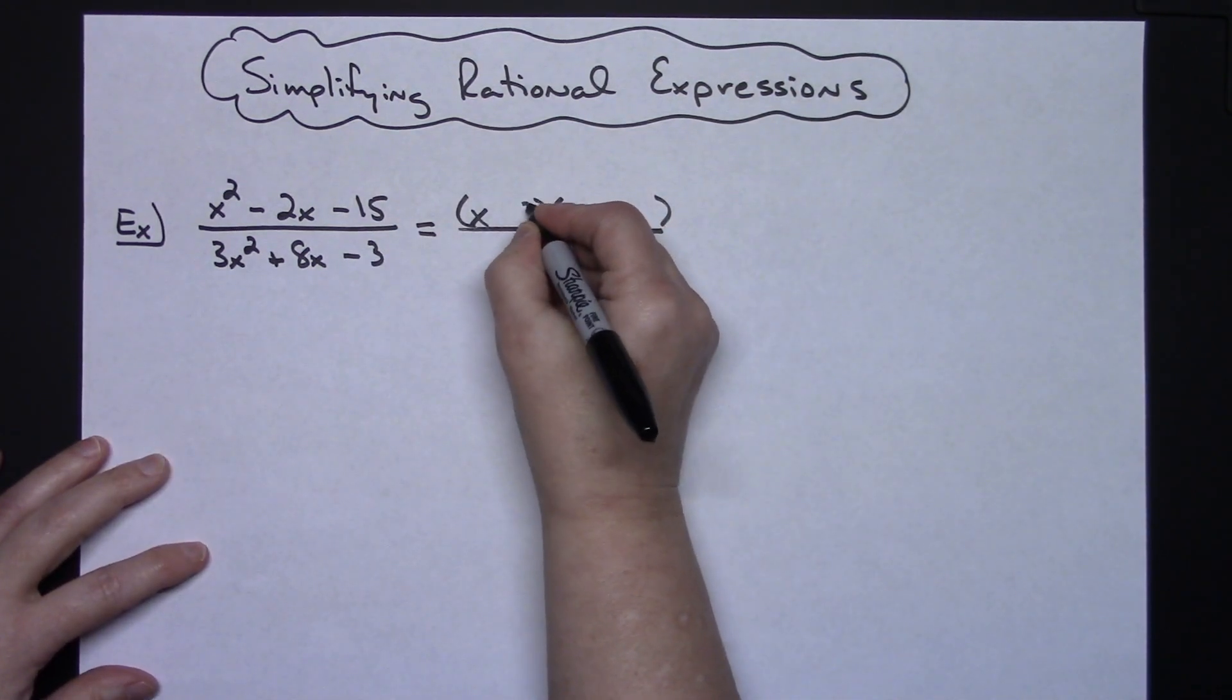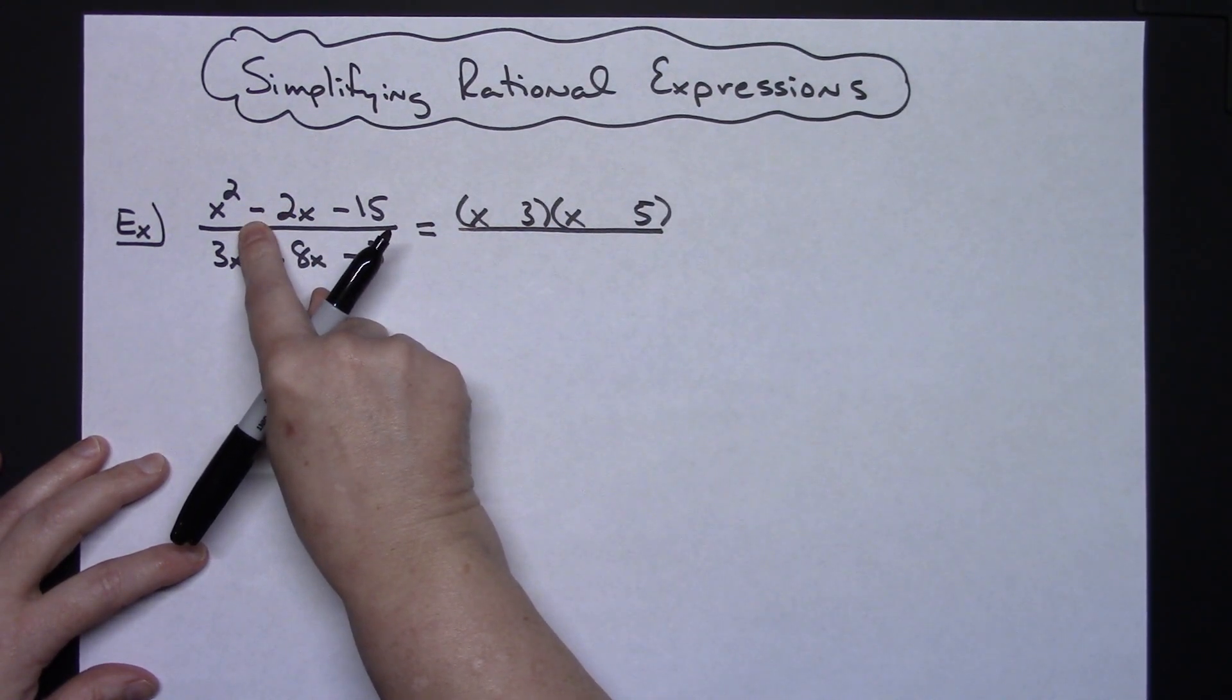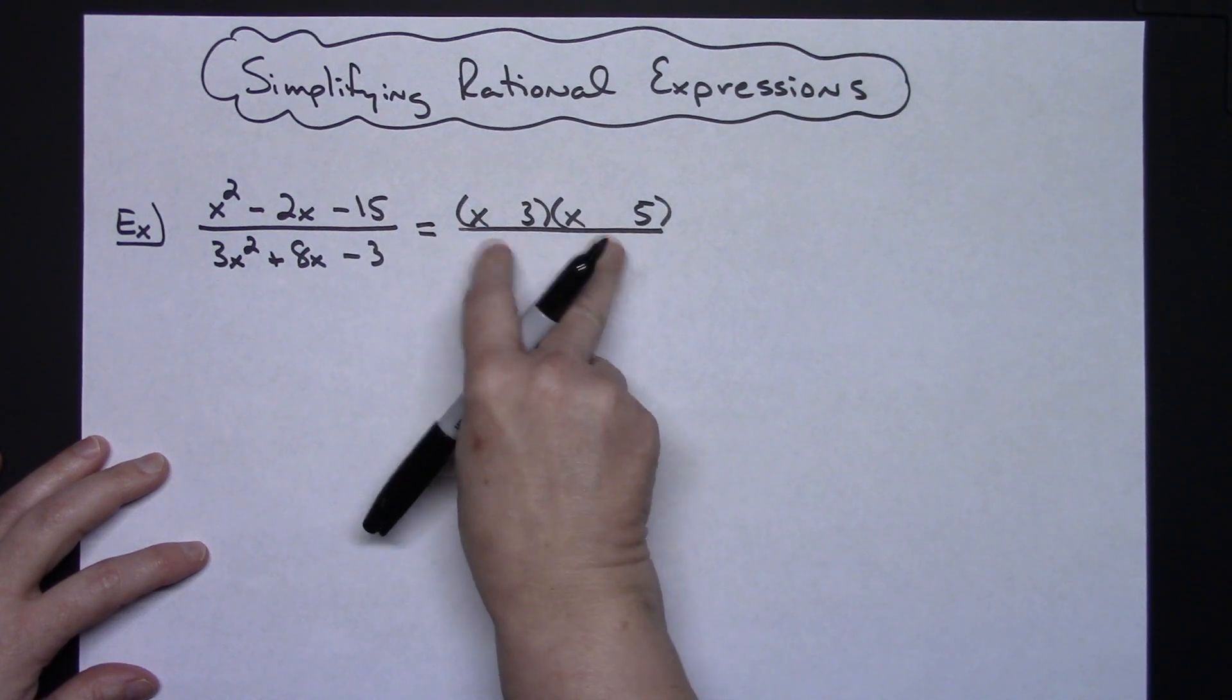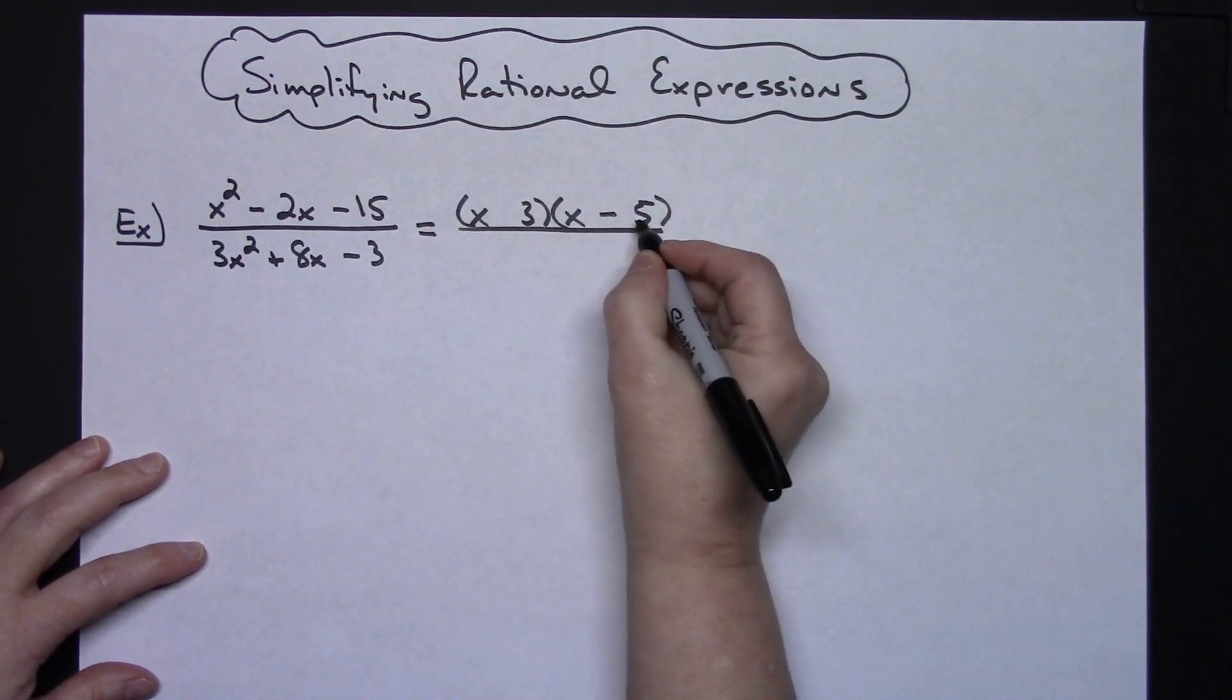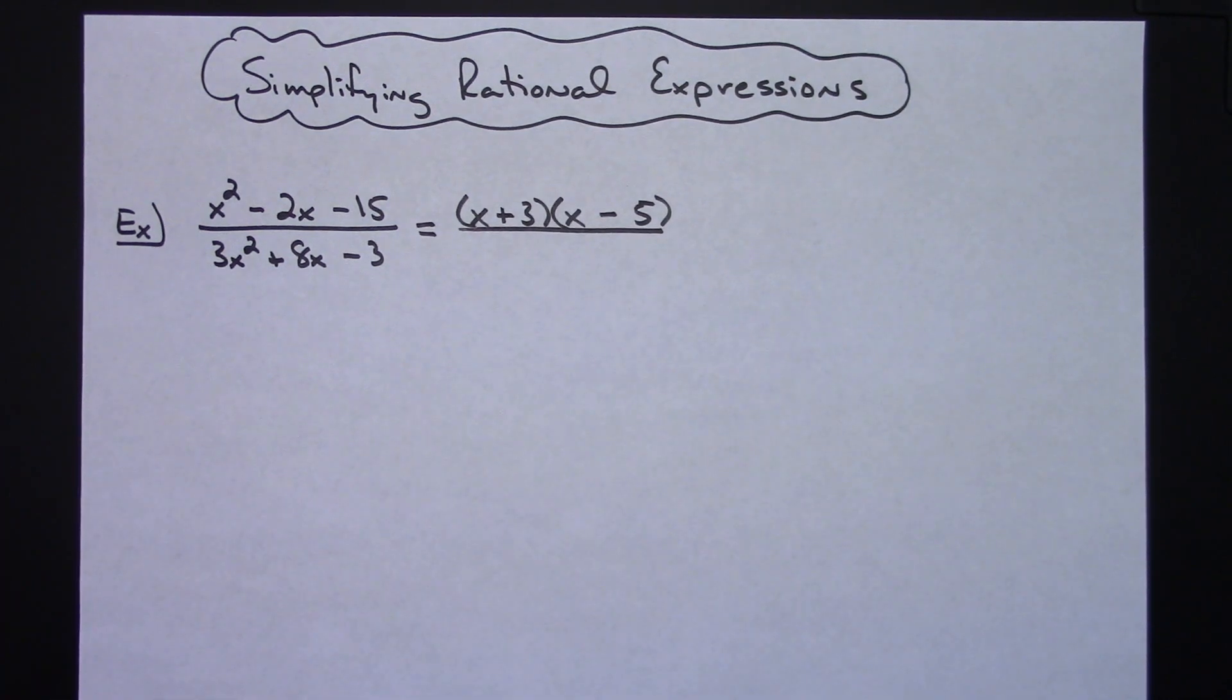All right so I know I'm going to have a 3 and a 5. All right and I have to have a negative 2 here and a negative 15 so I need unlike signs and that negative needs to go on the 5 so that the 2 is negative. So it's a guess and check on that.